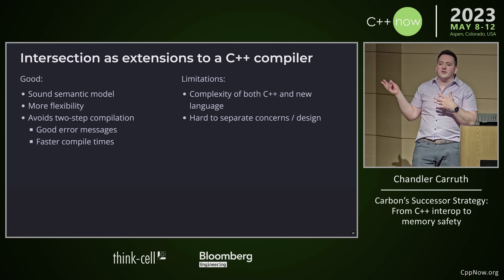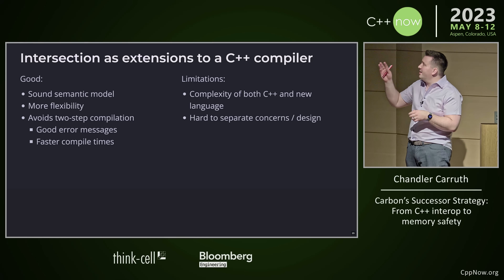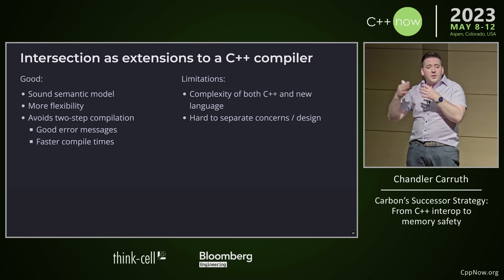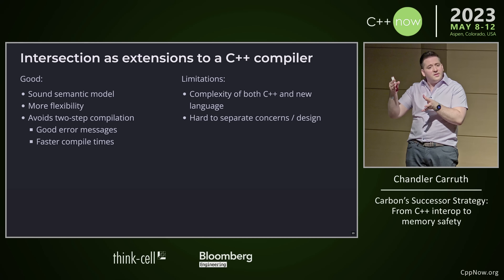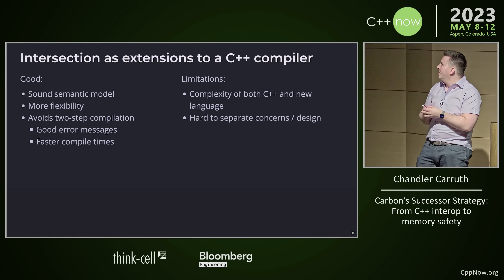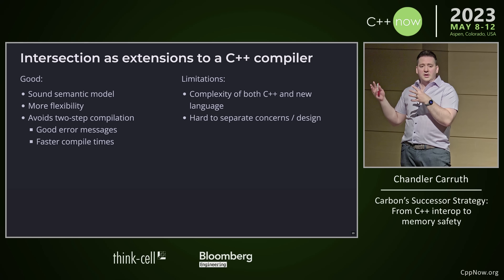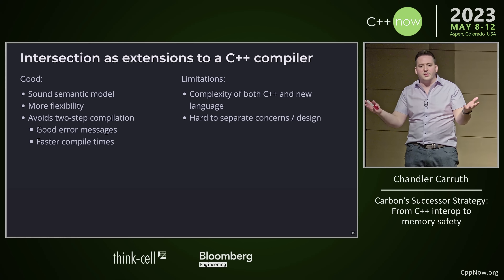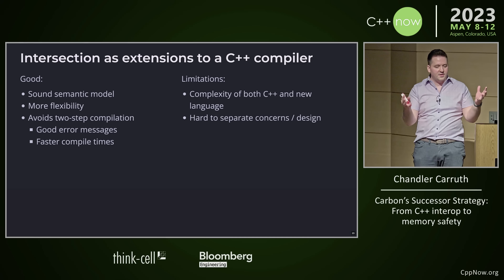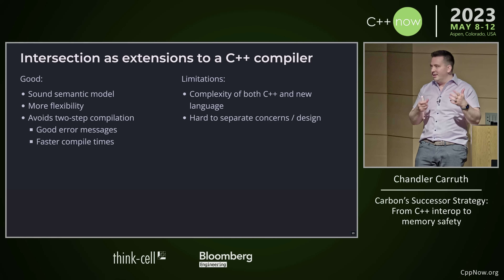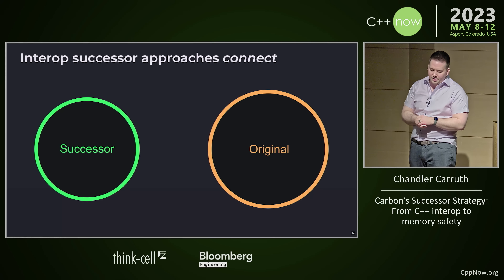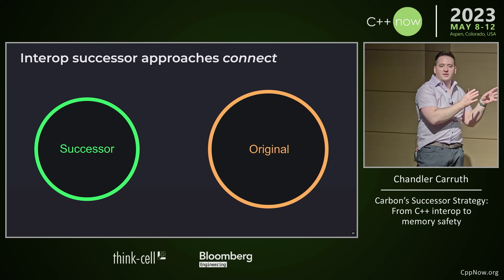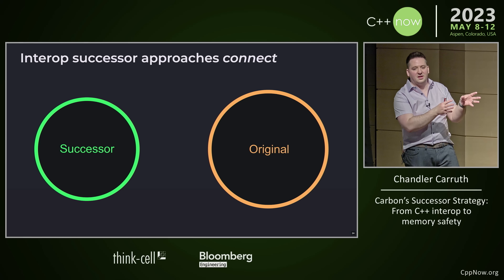Extending a C++ compiler gives you some flexibility — you can do things with that model that can be really difficult to express by lowering into C++, and it avoids the two-step compilation drawbacks. But this approach also has limitations. You have to deal with the complexity of both C++ and whatever new things you're adding. There's not a good separation of concerns between that complexity. Neither of these is definitely the right approach — there are trade-offs between them, and they give you different benefits and different drawbacks.